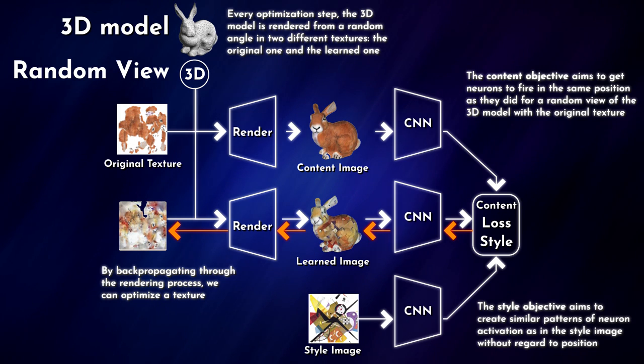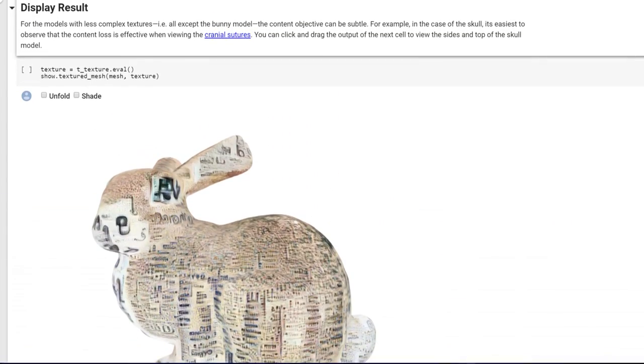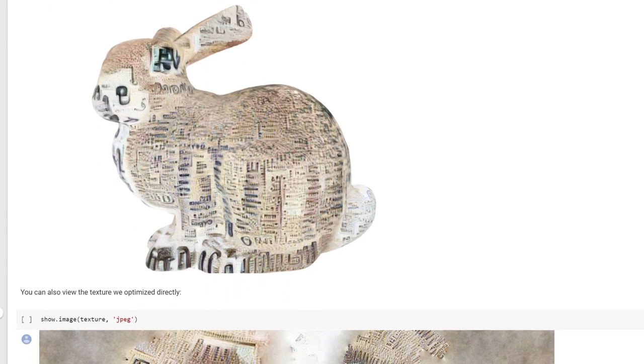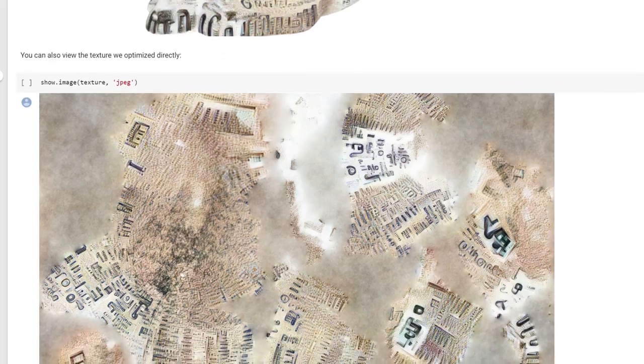The content loss optimizes the approximate positions of the pixels, whereas the style loss approximates the visual patterns without regard to the positions. Together, through gradient descent, it achieves a generated object. This probability model we learned, the probability of X and Y, where X is a 3D object and Y is the style image, outputs some gorgeous visualizations that we can play with inside of the Colab.